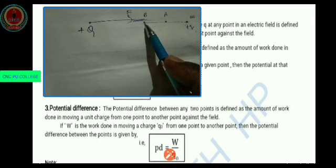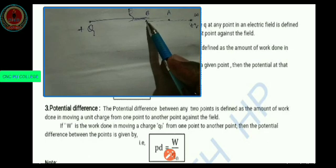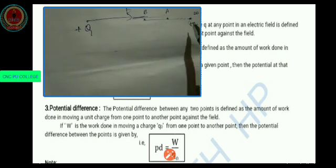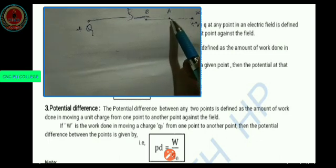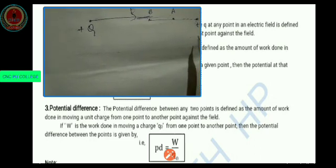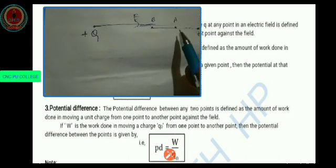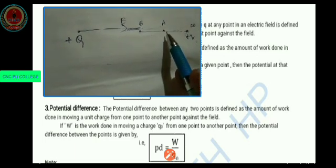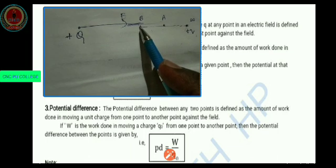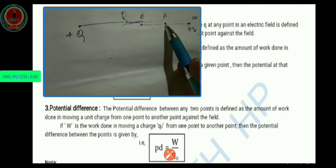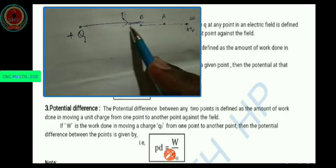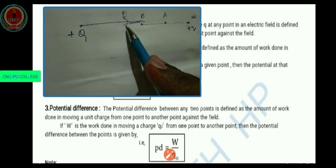The potential difference VB minus VA — because VB is more than VA. Here we should avoid using the word infinity, because we are using two points A and B as reference points. The potential difference between any two points is defined as the amount of work done in moving a unit charge from one point to another against the field, meaning we always move from lower potential to higher potential, that is from A to B. No work is needed to move a charge from higher potential to lower potential.